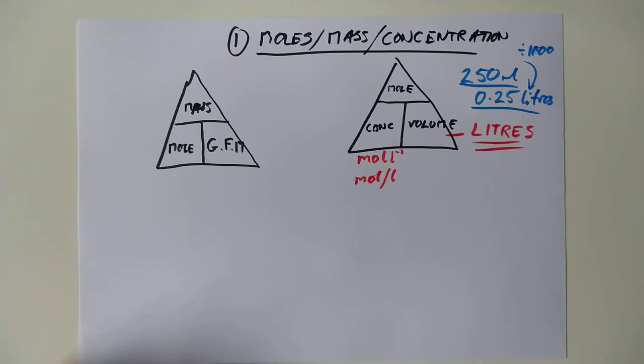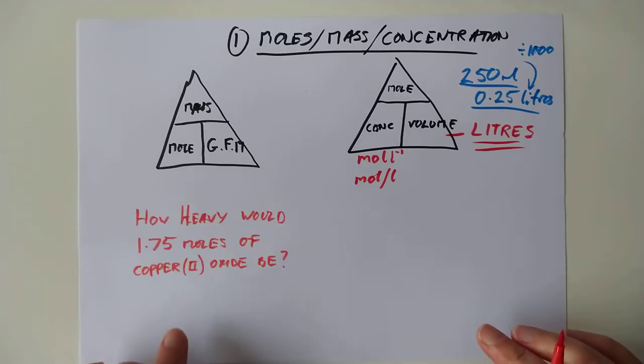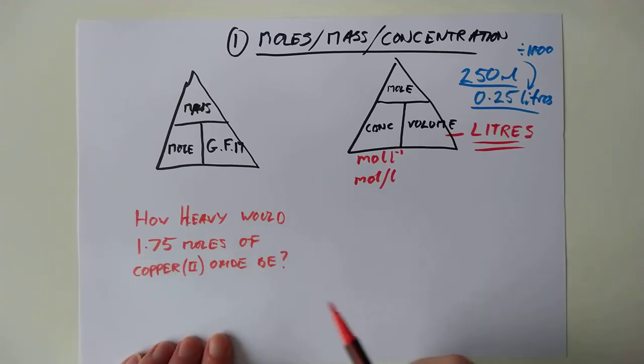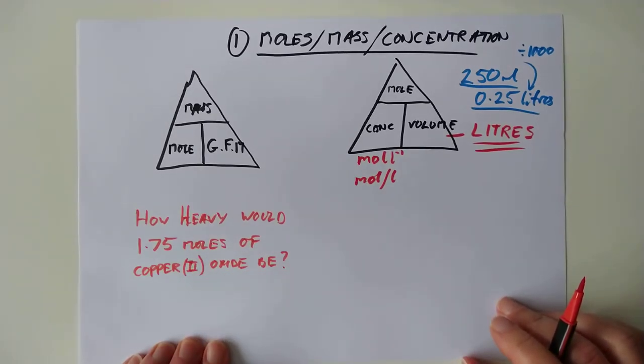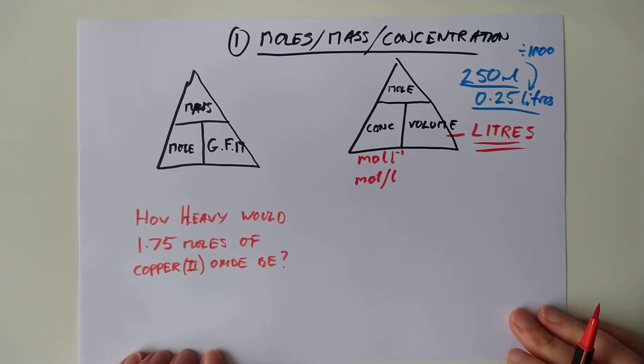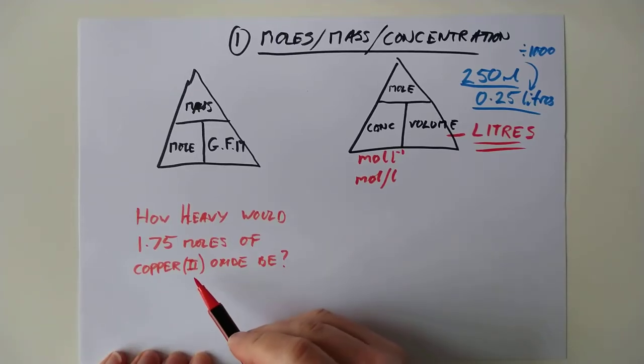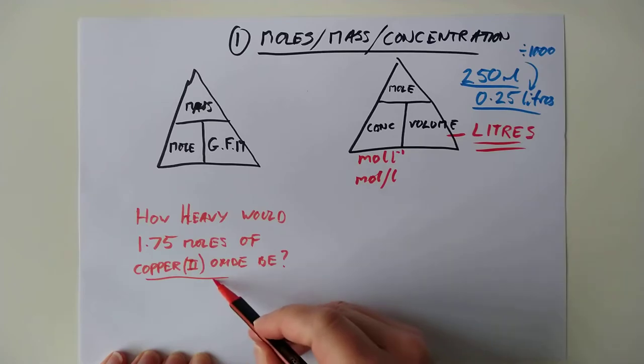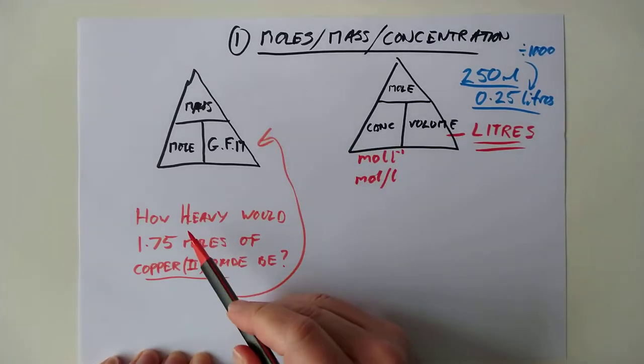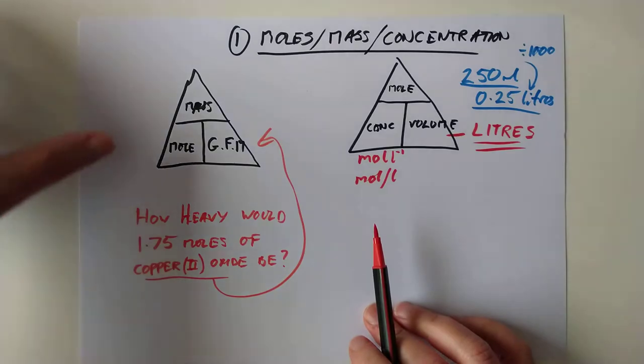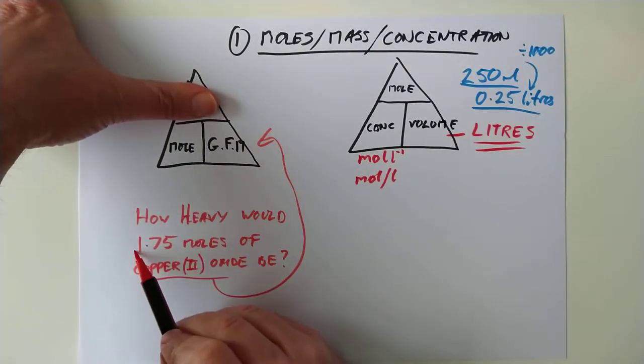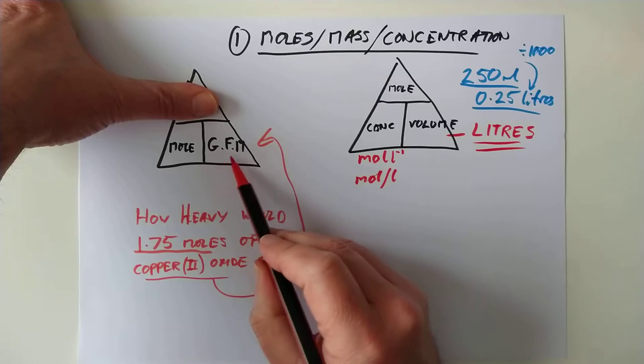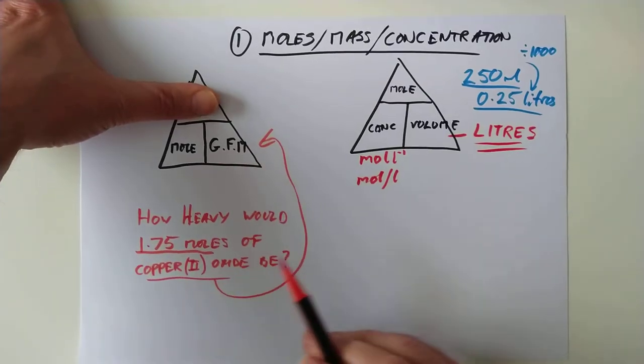Let's see if I can come up with an example. For the first example here, we've got a question asking you, what mass, or how heavy, would 1.75 moles of copper(II) oxide be? First of all, we need the correct formula that lets us work out the GFM. And of course, the thing we're looking for here is the mass, so we'll be covering up the mass. We need to know moles, which we do, 1.75 moles, and we need to know GFM. The question doesn't tell us, but we can work it out.